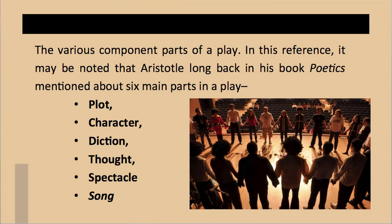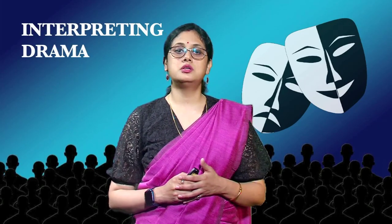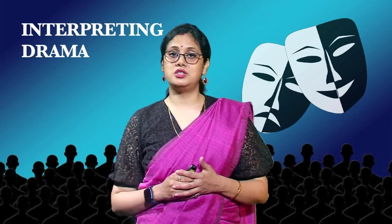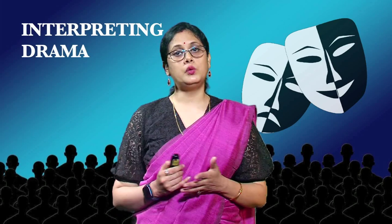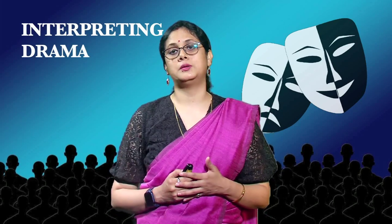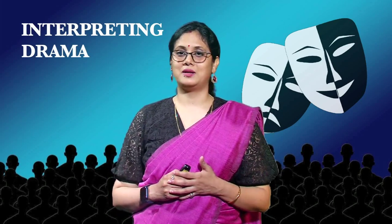In this reference, it may be noted that Aristotle, long back in his book Poetics, mentioned about six main parts in a play: plot, character, diction, thought, spectacle and song. Of course, he referred to these elements in case of tragedy only, though in general, these are applicable in all types of play.